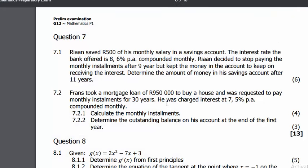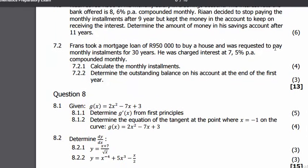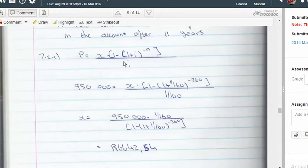Well done student. Okay, Frans took out a mortgage loan of 950,000 to buy a house and was requested to pay monthly installments for 30 years. He was charged interest at 7.5% p.a. compounded monthly. Calculate his monthly installments, very routine procedure.